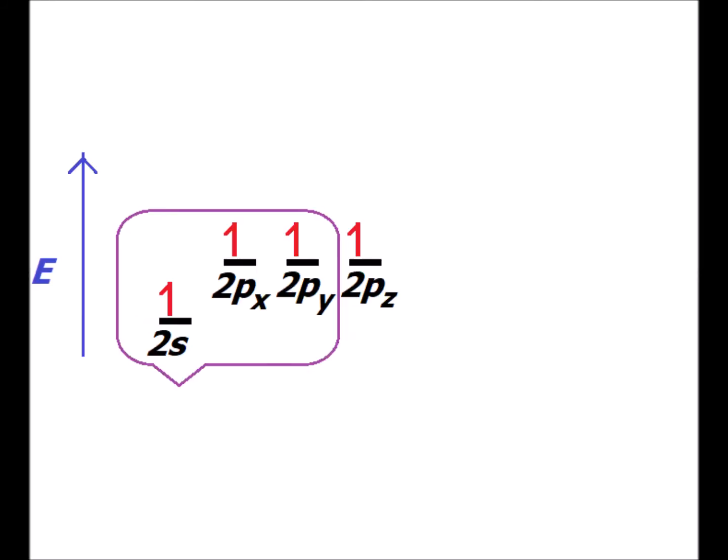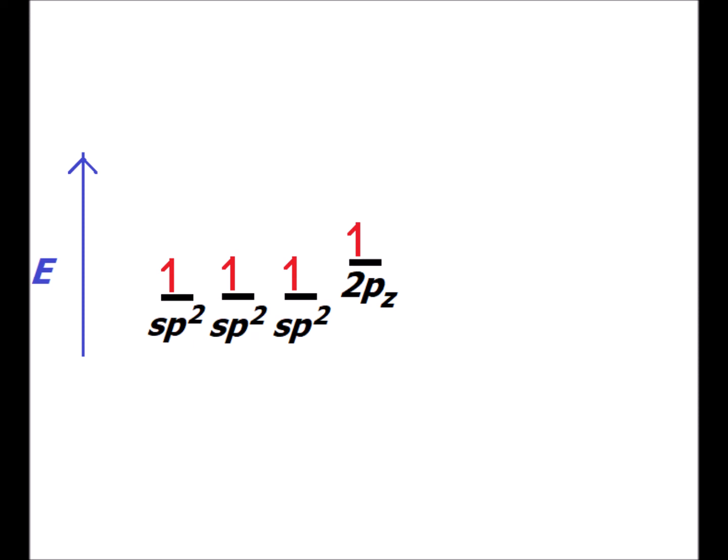Now let's suppose that we hybridize three carbon orbitals — the 2s and two of the 2p — represented by a purple balloon around them. We imagine that in the hybridization process we now get three equally energetic hybrids: three sp² orbitals that have the same energy, while the 2pz orbital, which is unhybridized, is unaffected and its energy does not change. The sp² hybrids will have a trigonal planar configuration with angles of 120 degrees from each other.